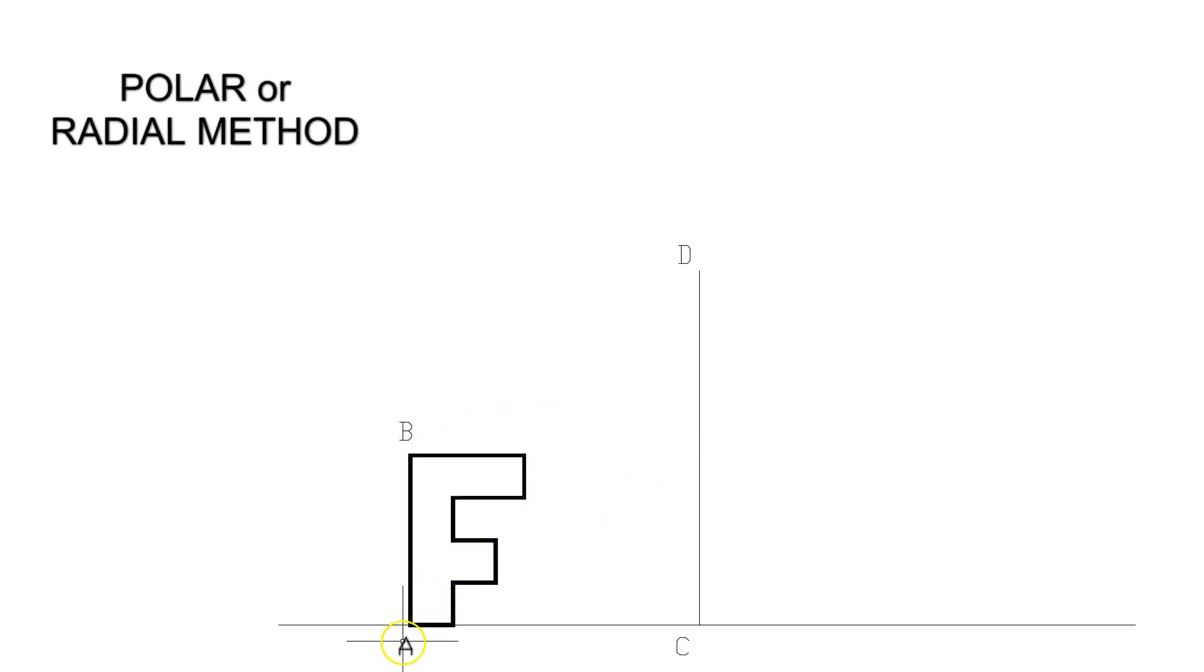And in this question, you're asked to enlarge the figure AB onto DC. So that means that this length here, AB, will fit onto this length, DC, and the F will be enlarged, so it's bigger.